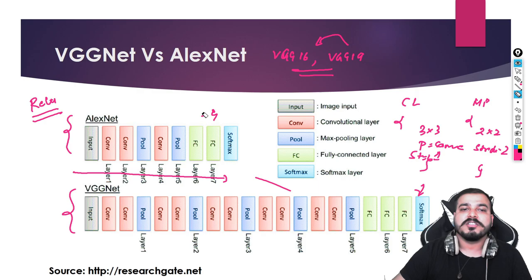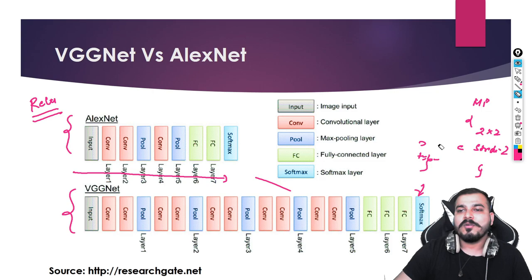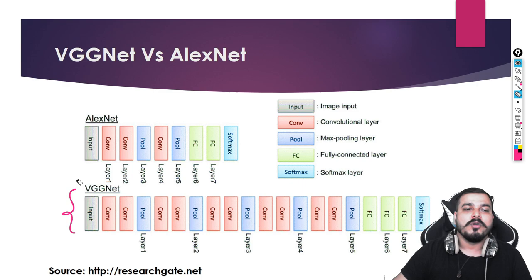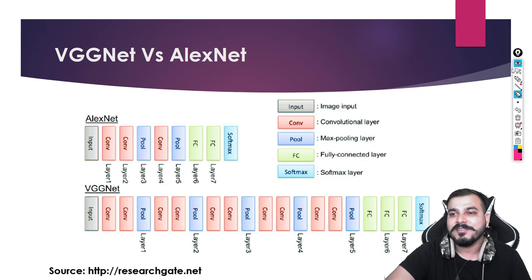Once you understand the architecture, the next thing to understand is the coding. Unless I show you the coding, everyone will want to see it — so it's better that I show you. The coding part is very simple; you just have to trust Keras. Let me minimize this and show you.